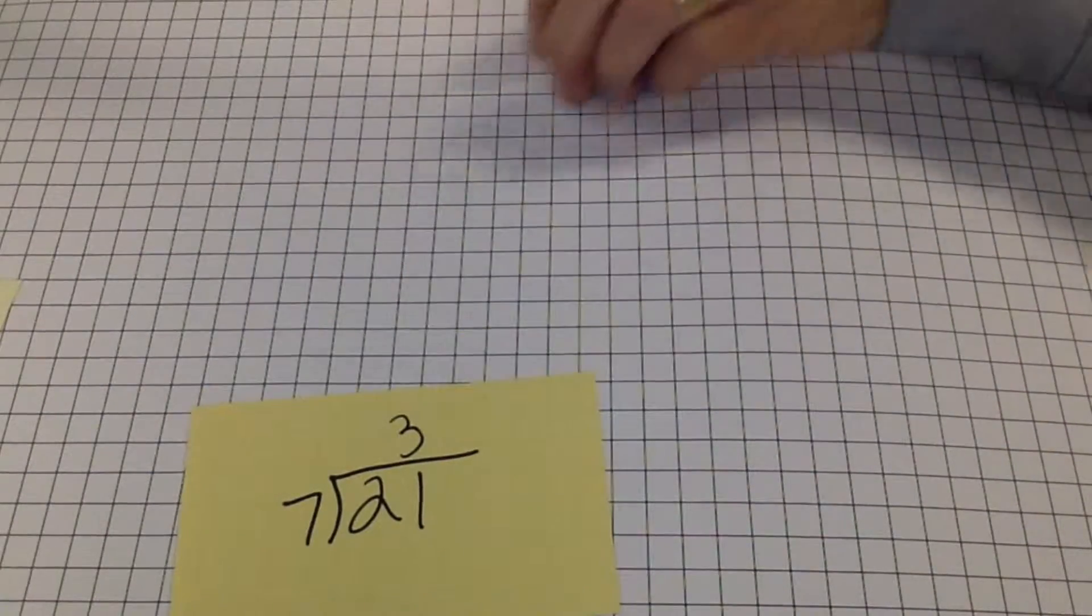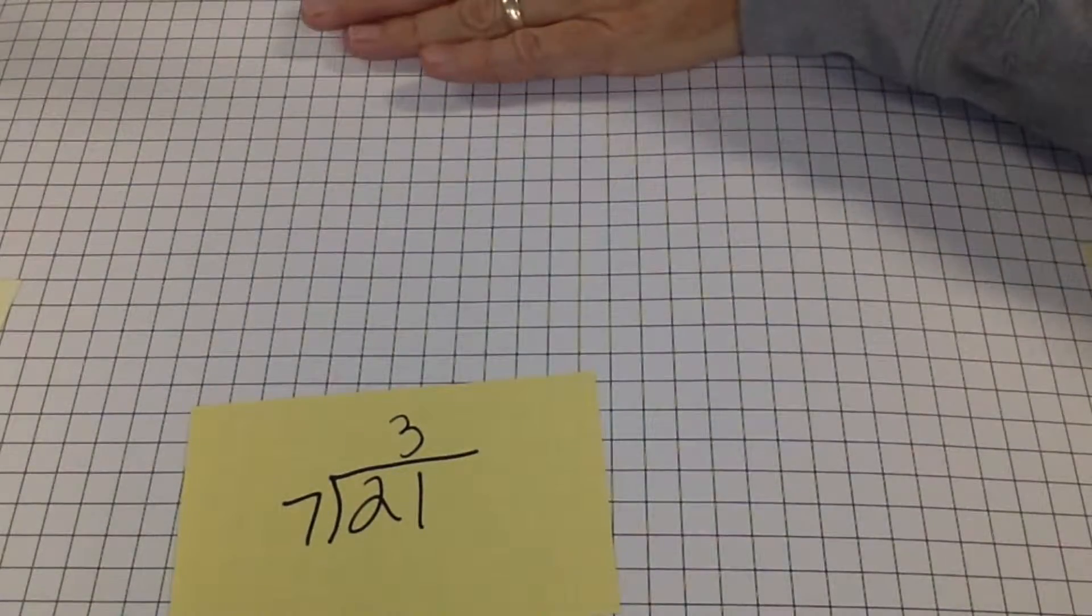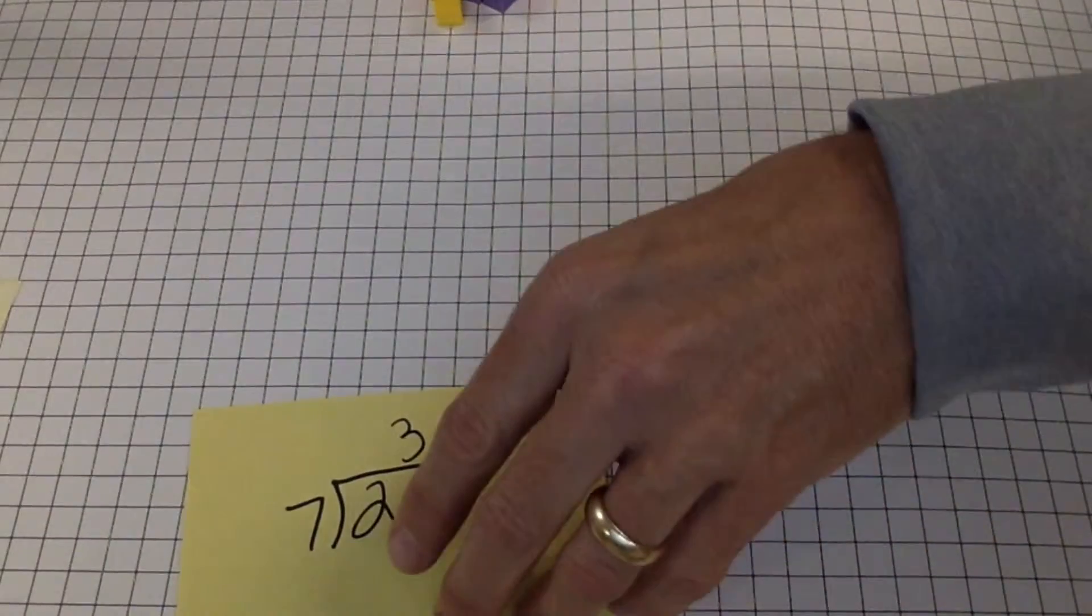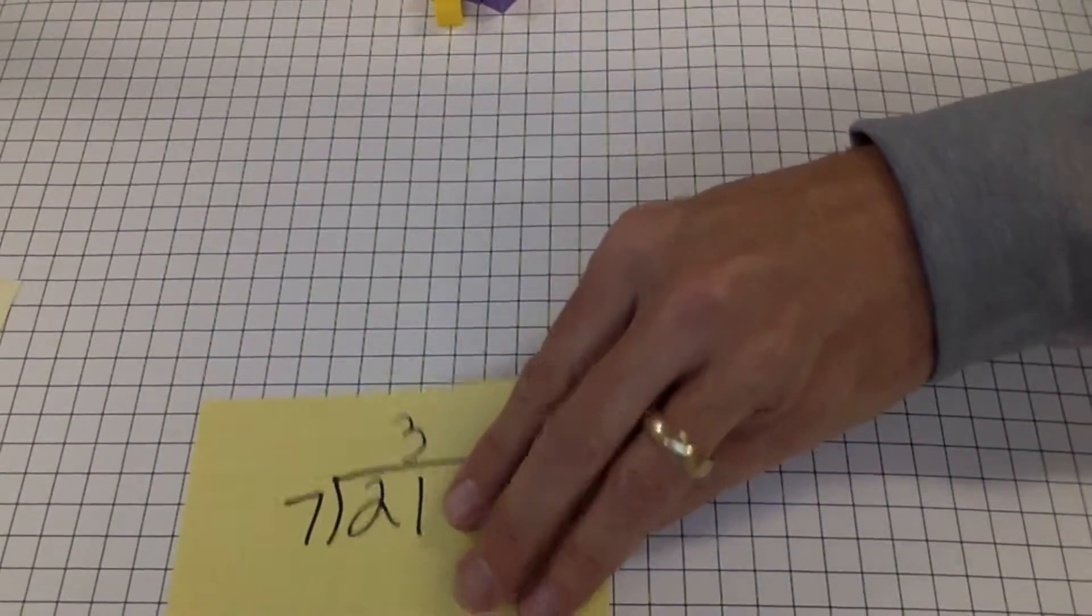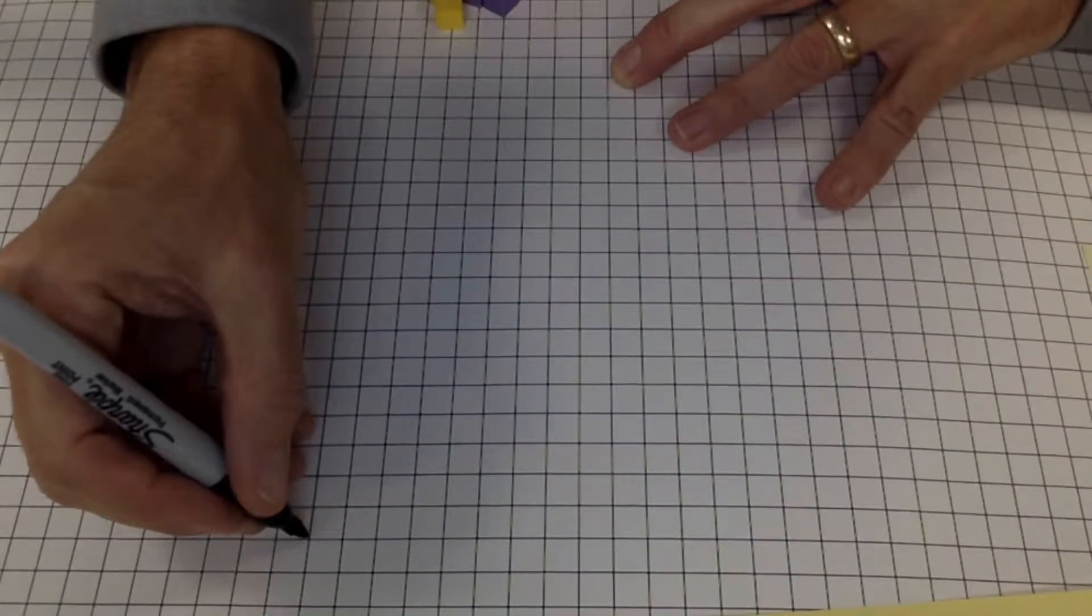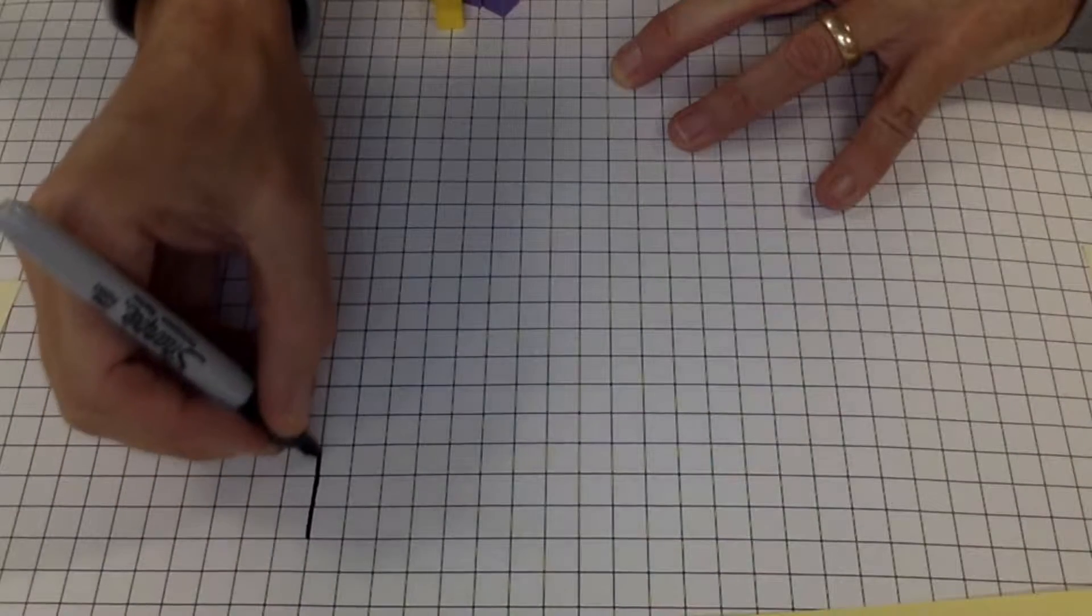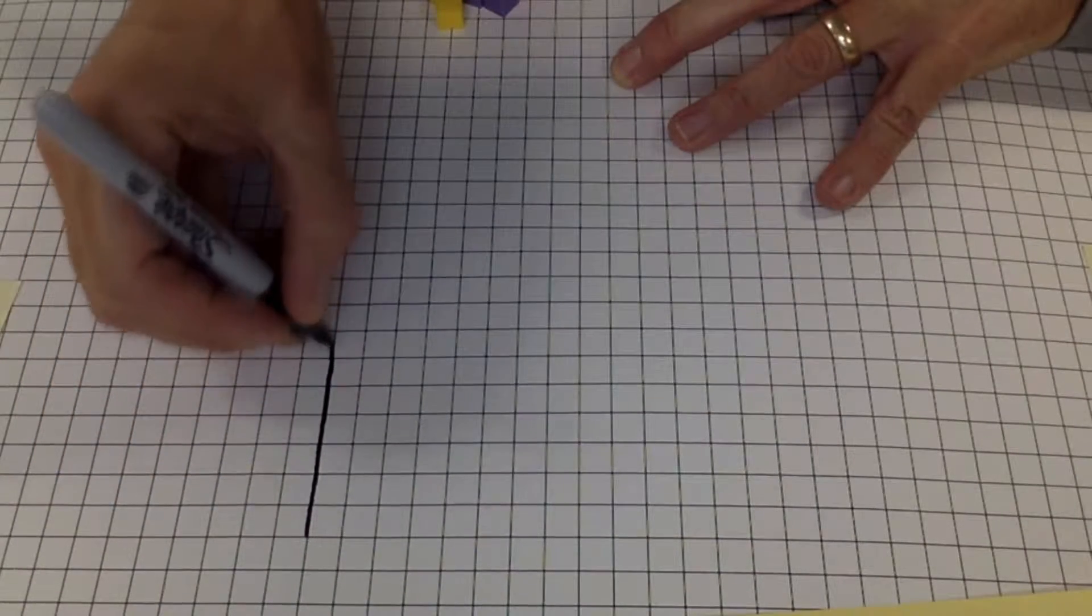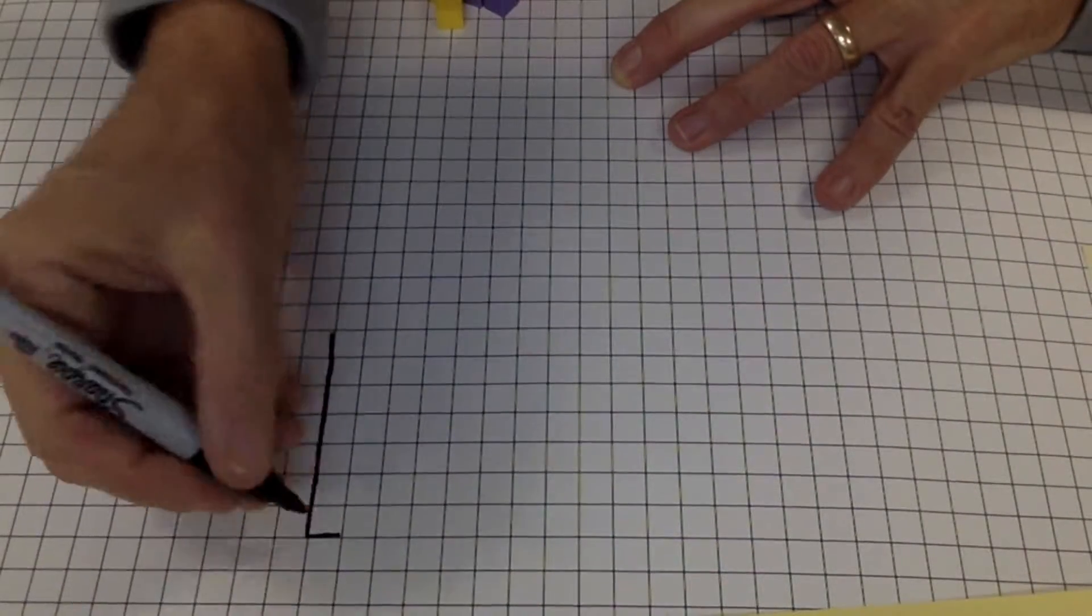Now if you don't have cubes, and this works for any problem. Now if you don't have cubes, you can do the same problem on graph paper. Except I'm going to count to 21 again. So I'm going to start. 1, 2, 3, 4, 5, 6, 7. There's one of my rows, right?